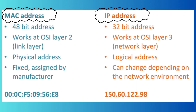Now that we know both IP and MAC addresses, let's see their differences. A MAC address is a 48-bit address and an IP address is a 32-bit address. In the OSI 7-layer model, a MAC address works in the second layer — the data link layer — whereas an IP address works in the third layer — the network layer. A MAC address is a physical address that is hard-coded, but the IP address is a logical address that could change. The MAC address is fixed and assigned by the manufacturer, while the IP address could change depending on the network environment.